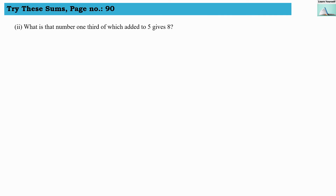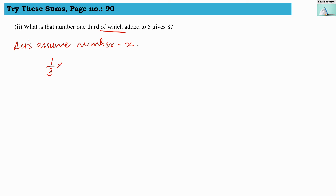Try this sums page number 90. What is that number one third of which, added to 5, gives 8? So let us assume the number equals to x. One third of which means we have to multiply one third with that number. So one third into x, and then added to 5 gives 8, means equals to 8. Now this is our equation.